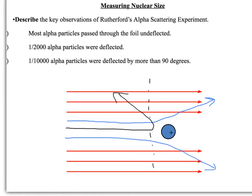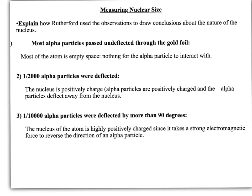In terms of conclusions from these observations: the fact that most particles passed through undeflected means most of the atom is empty space — they encountered nothing. The fact that one in 2,000 were deflected told you the nucleus was positively charged, because the alpha particles, which are themselves positively charged, were deflected away by the nucleus.